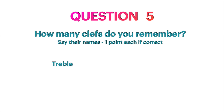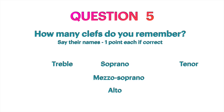Question 5: How many clefs do you remember? Let's say them again: treble, soprano, mezzo soprano, alto, tenor, baritone, and bass. If you got them all right, you should have seven points in this question. Try to say their names again: treble, soprano, mezzo soprano, alto, tenor, baritone, and bass.